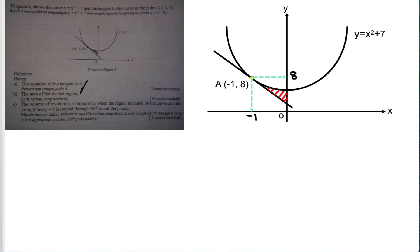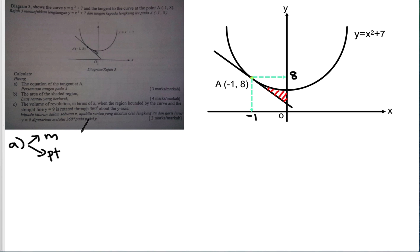For part A, to find the equation of the tangent, you need two pieces of information: the gradient and a point. In this chapter we don't use (y2 - y1)/(x2 - x1) because this is the integration chapter. We find the gradient using dy/dx. The point we already have, which is (-1, 8).